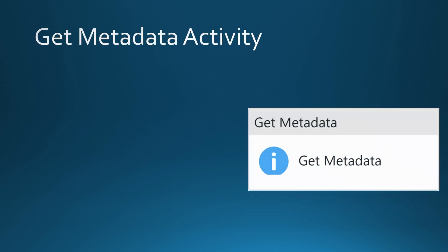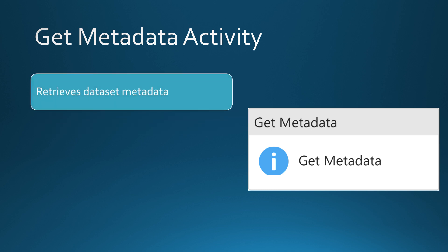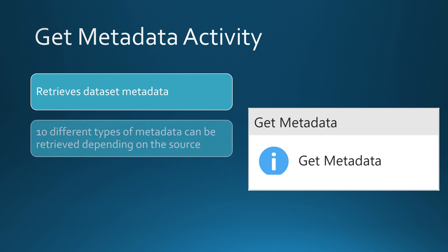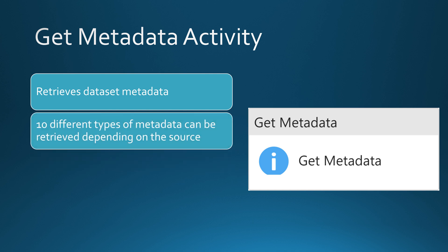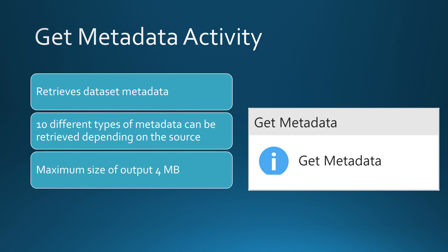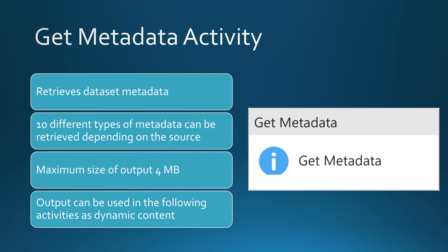Now let's look at this activity in a bit more detail. Here we can see how the Get Metadata activity looks in the Data Factory UI. It is an activity that retrieves metadata information about a dataset. There are 10 different types of metadata currently supported in Data Factory, depending on the source or linked service for that dataset. The maximum output size is 4 megabytes, and the output can be used in the following activity as dynamic content. This activity is similar to the lookup activity covered in the previous video.